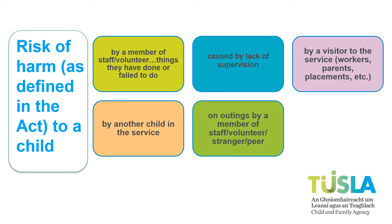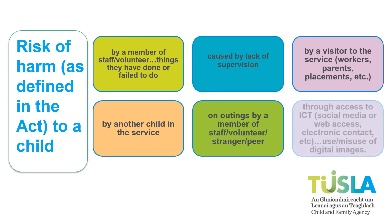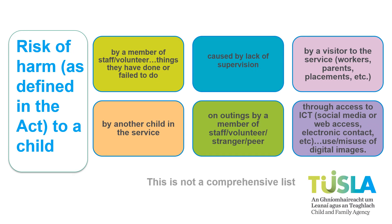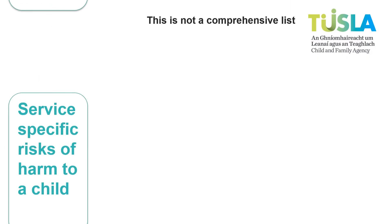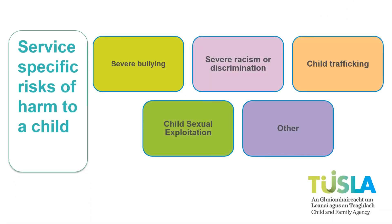The risk of harm to a child on outings by a member of staff, volunteer, stranger, or peer. The risk of harm through access to ICT, such as social media or web access, electronic contacts, or the risk of harm to a child from the use or misuse of digital images. There may be other areas of risk specific to the activities you provide or the children who use your service. Some services might also choose to include reference to the risk of harm from severe bullying or discrimination in their risk assessment.